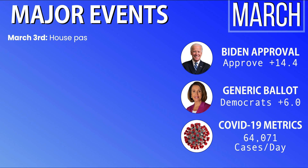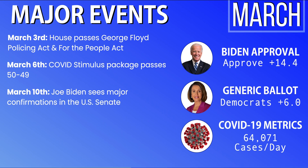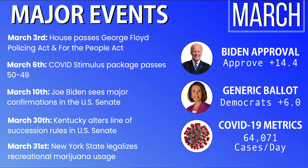In the month of March, on March 3rd, the House passed the George Floyd Policing Act and the For the People Act. On March 6th, the COVID-19 stimulus package passed by a vote of 50 to 49 through budget reconciliation, with the only absent senator being Dan Sullivan from Alaska. On March 10th, Joe Biden saw a number of major confirmations in the United States Senate. On March 30th, Kentucky changed its Senate line of succession rules in anticipation of Mitch McConnell's possible retirement with a Democratic governor. On March 31st, New York legalized recreational marijuana. Joe Biden continues high, Democrats remain at plus six, and we're at about 64,000 COVID cases per day.